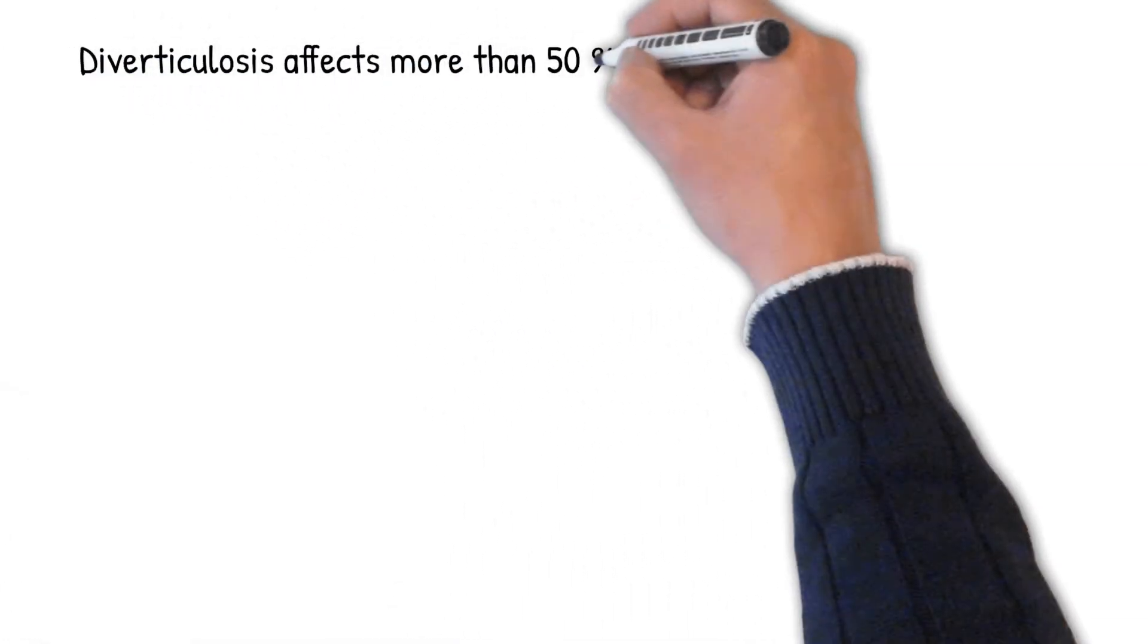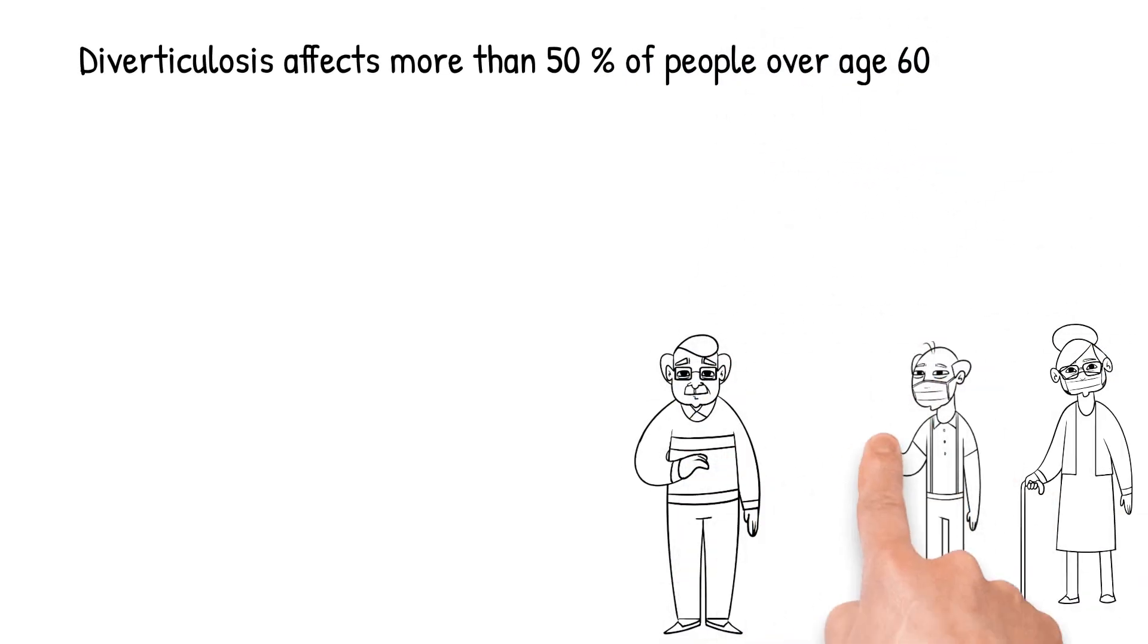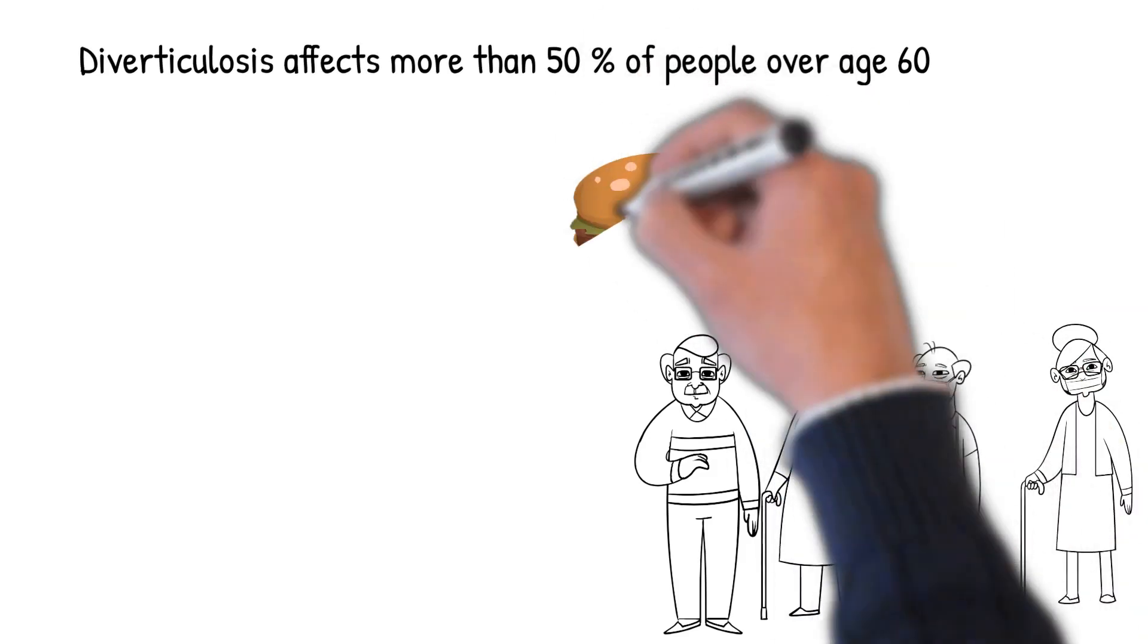Diverticulosis affects more than 50% of people over age 60 and more than 70% for age 80. This means age is an important risk factor for developing diverticulosis.